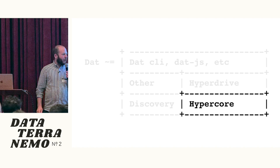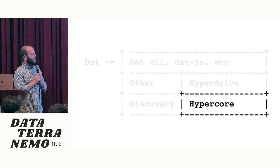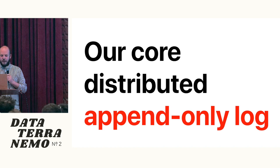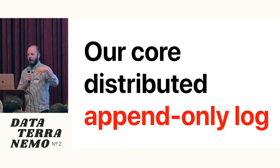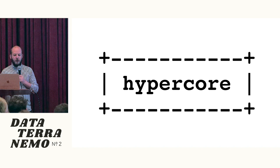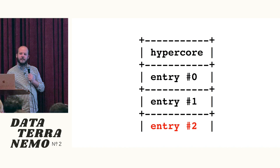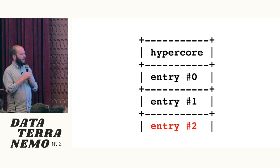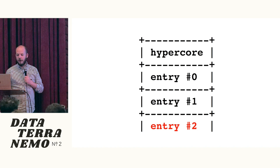I'll start talking about HyperCore because that's going to be by far the most boring part of this conversation — I'll just get that out of the way. If you don't know HyperCore, it's in the dat stack — it's the lowest level distributed component we have, basically the thing we've built everything on top. It's what we call our core distributed append-only log. An append-only log is basically like a list, like an array, that just keeps growing — very easy to append to and get items out of.